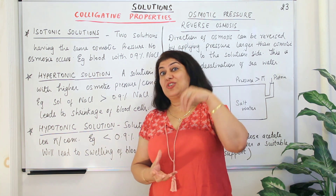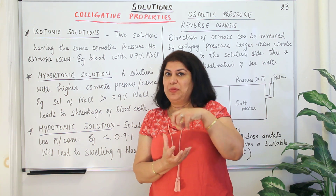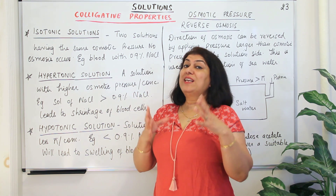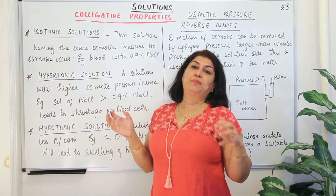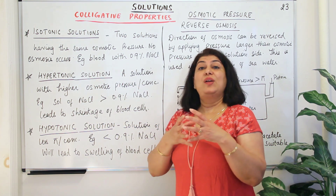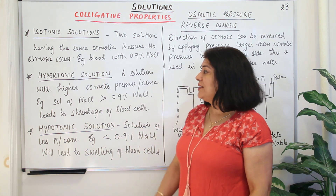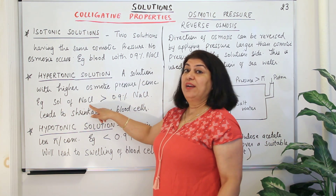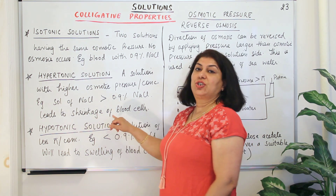You have put the blood cell in a solution of higher concentration. The concentration inside the blood cell is less than the concentration outside in the sodium chloride solution. Therefore, the solvent — that is water molecules — will start moving out through the semi-permeable membrane into the sodium chloride solution. As a result, the blood cell will shrink. A hypertonic solution is a solution with higher osmotic pressure or concentration — for example, greater than 0.9% sodium chloride — and it leads to the shrinkage of blood cells.